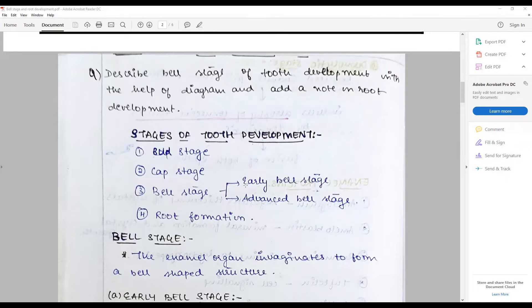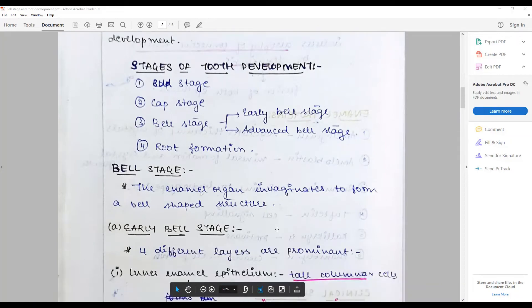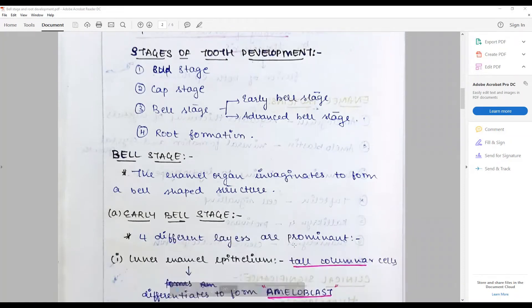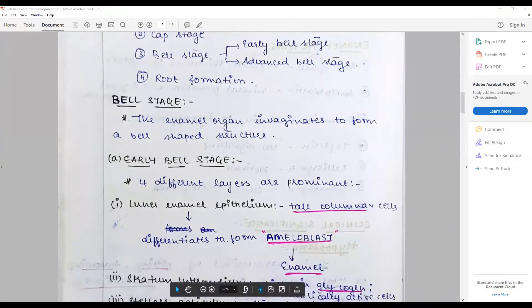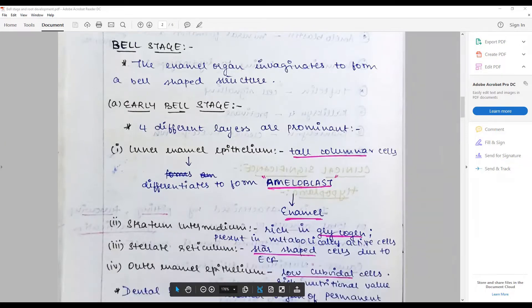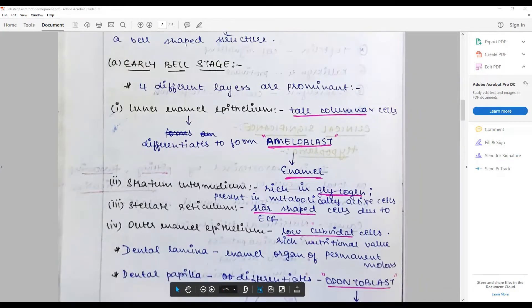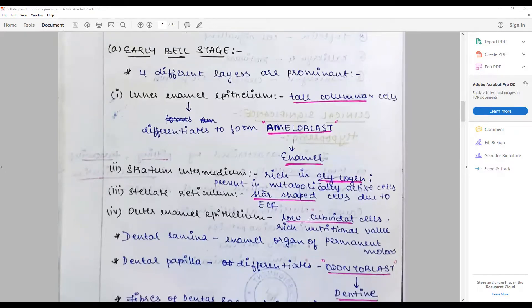Next, talk about the bell stage. Brief introduction: the bell enamel organ from the cap stage invaginates to form a bell-shaped structure by differential division. The rate of division at different places occurs at different speeds, giving rise to this early bell stage. The early bell stage has four prominent different layers: the inner enamel epithelium - tall columnar cells that later differentiate to form ameloblasts that give rise to enamel. The stratum intermedium, that is rich in glycogen, present in metabolically active cells. Stellate reticulum - star-shaped cells due to the extracellular fluid presence that is usually lost during section formation. The outer enamel epithelium are low cuboidal cells rich in nutritional value, helps in the absorption of nutrition across the substrate.